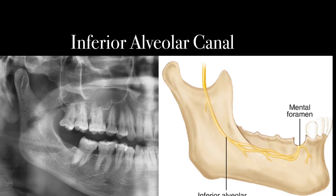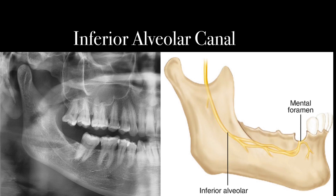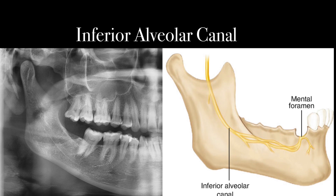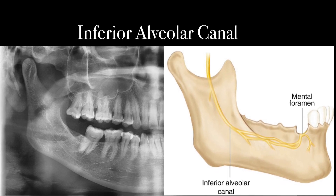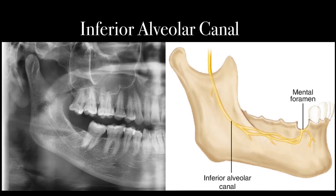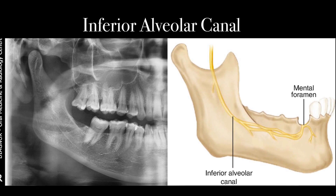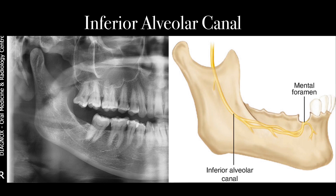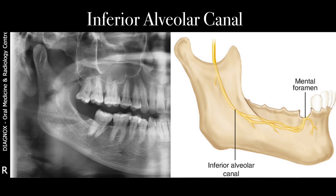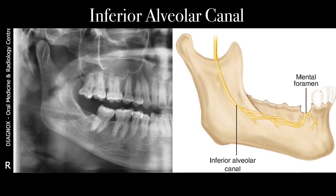The inferior alveolar canal is seen radiographically as a radiolucent area starting from the mandibular foramen and exiting at the mental foramen. It has a superior and an inferior radiopaque cortex. Lying within the inferior alveolar canal is the inferior alveolar nerve, and any procedures that cause damage to this canal and nerve will result in paresthesia.